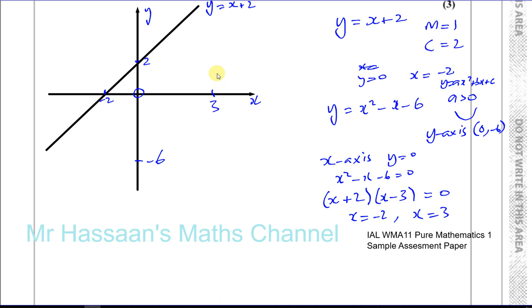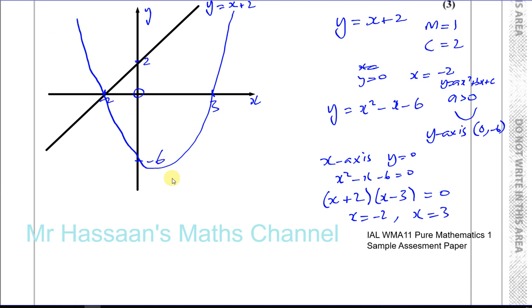So we can see it's going to come down, crossing at minus 6 on the y-axis, then come back up through minus 2 and 3 on the x-axis. Try to make a nice smooth sketch — don't make it too pointy or straight-lined; it has to be curved. It comes down and then goes back up again. That's y equals x squared minus x minus 6.